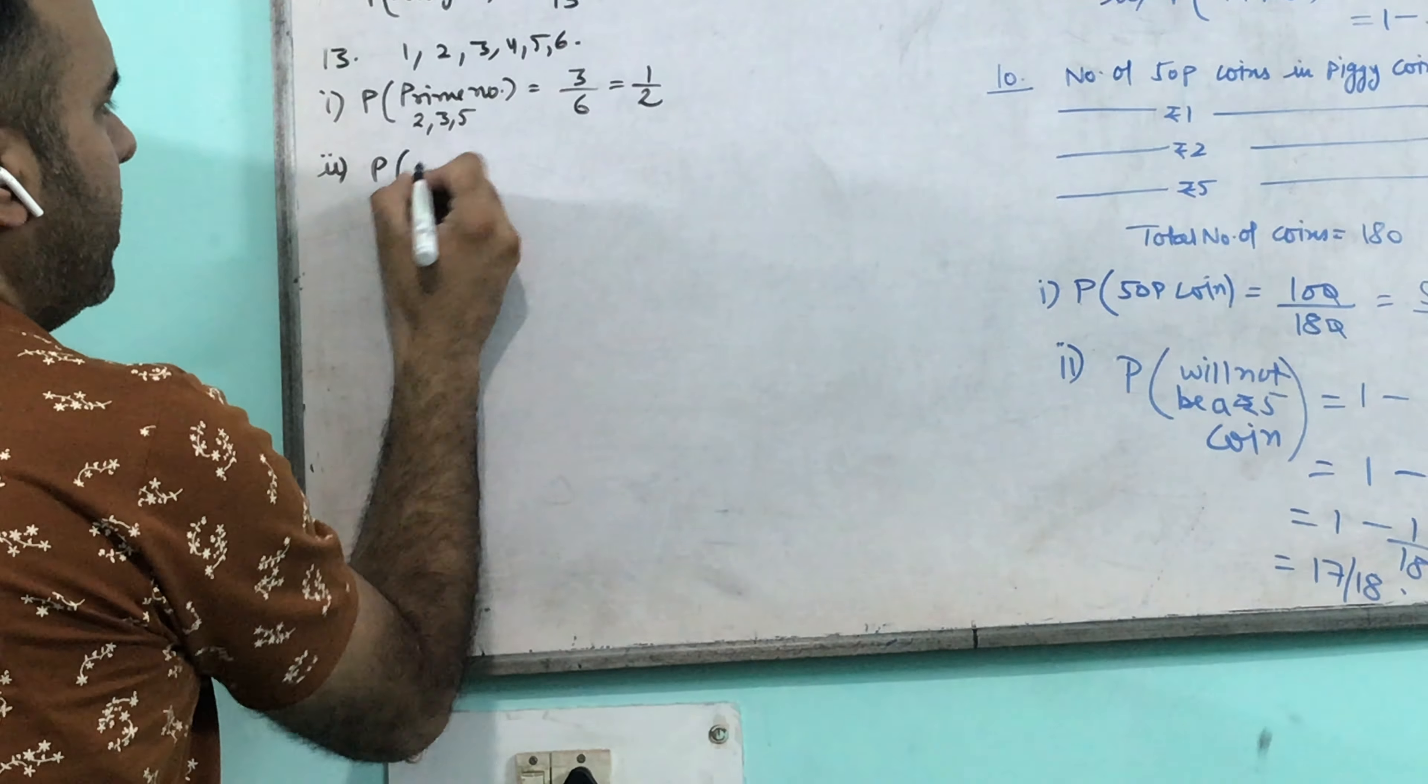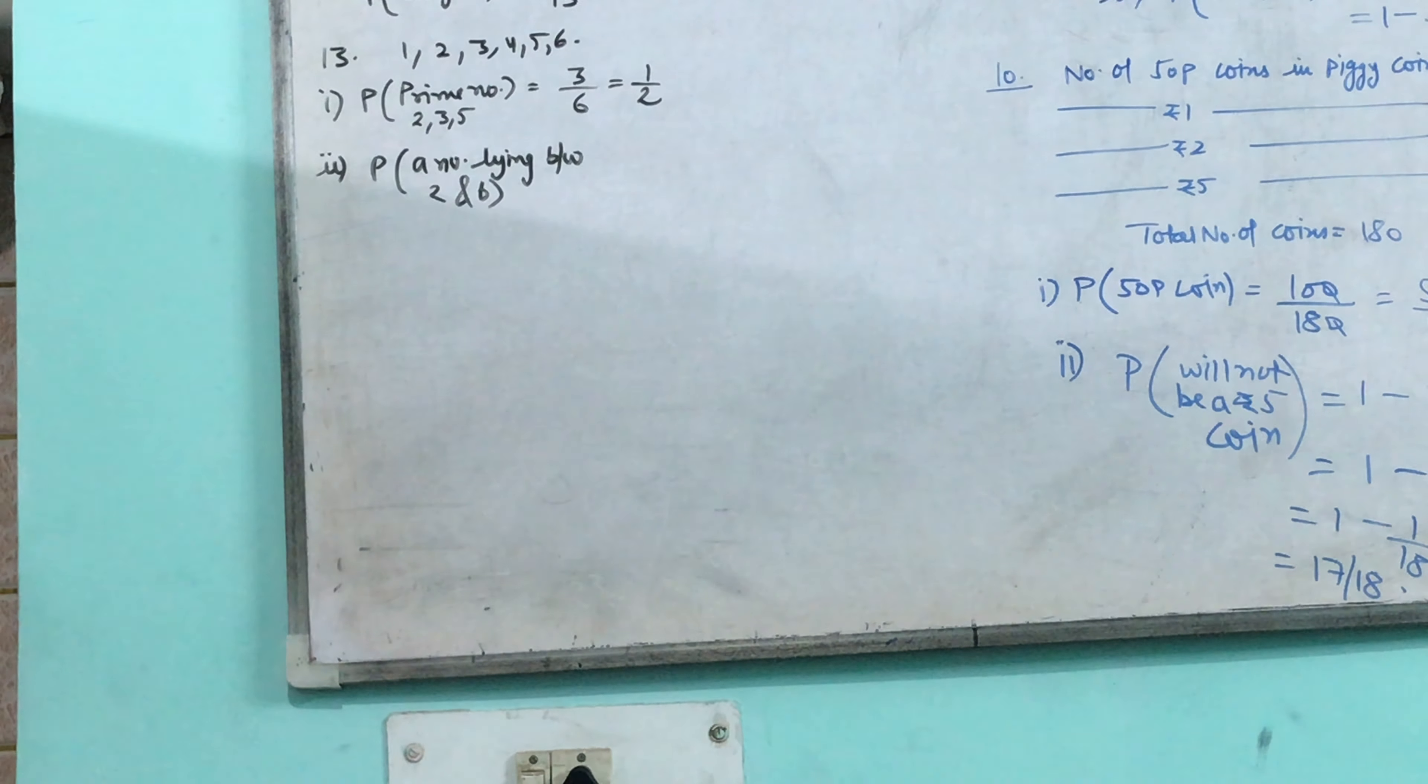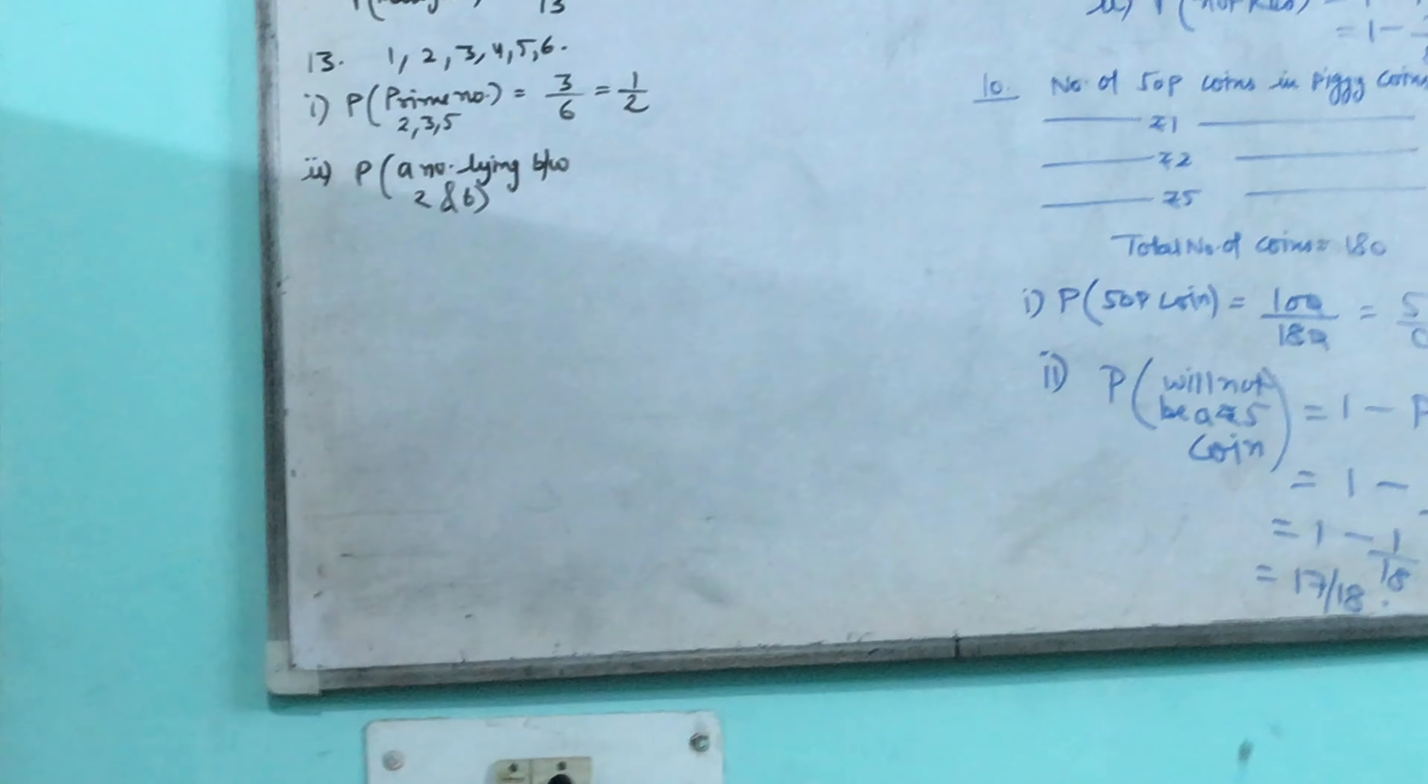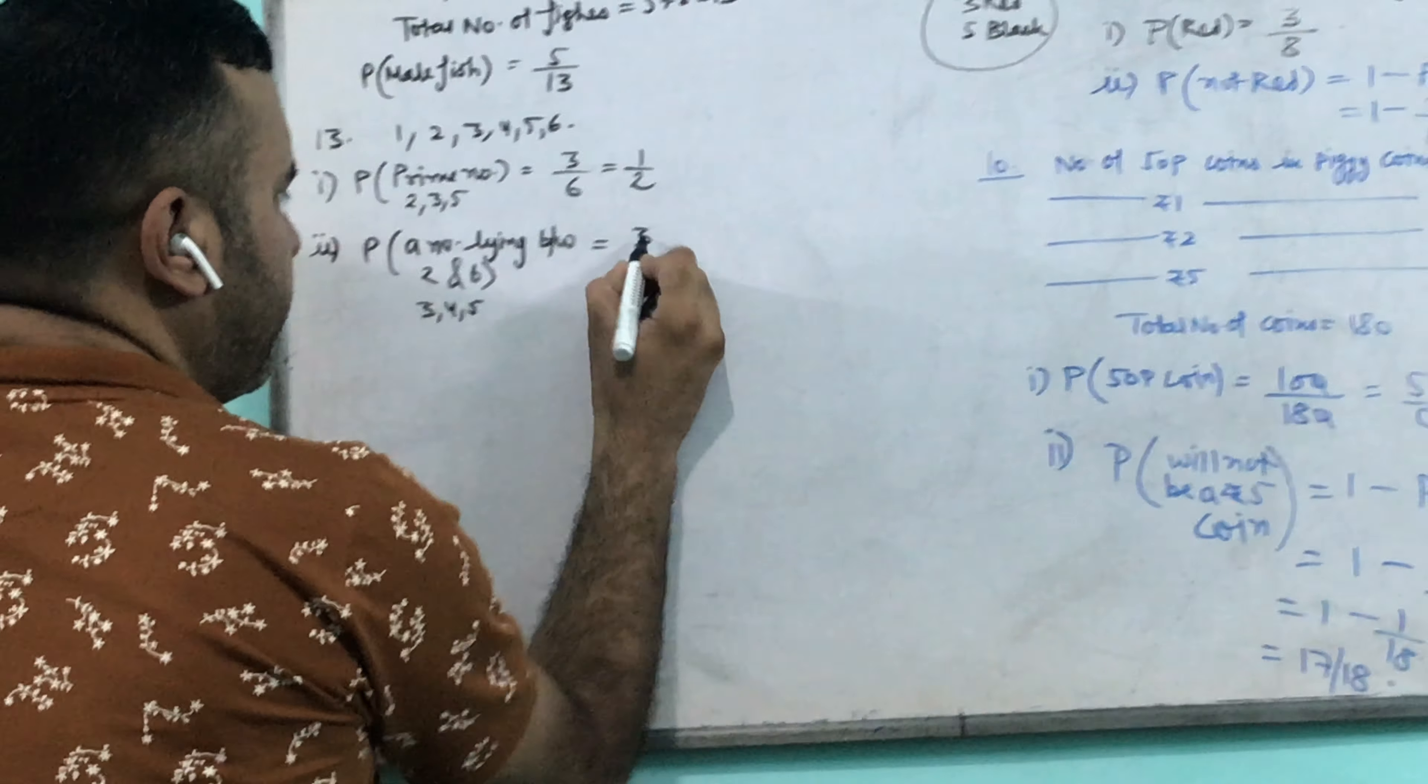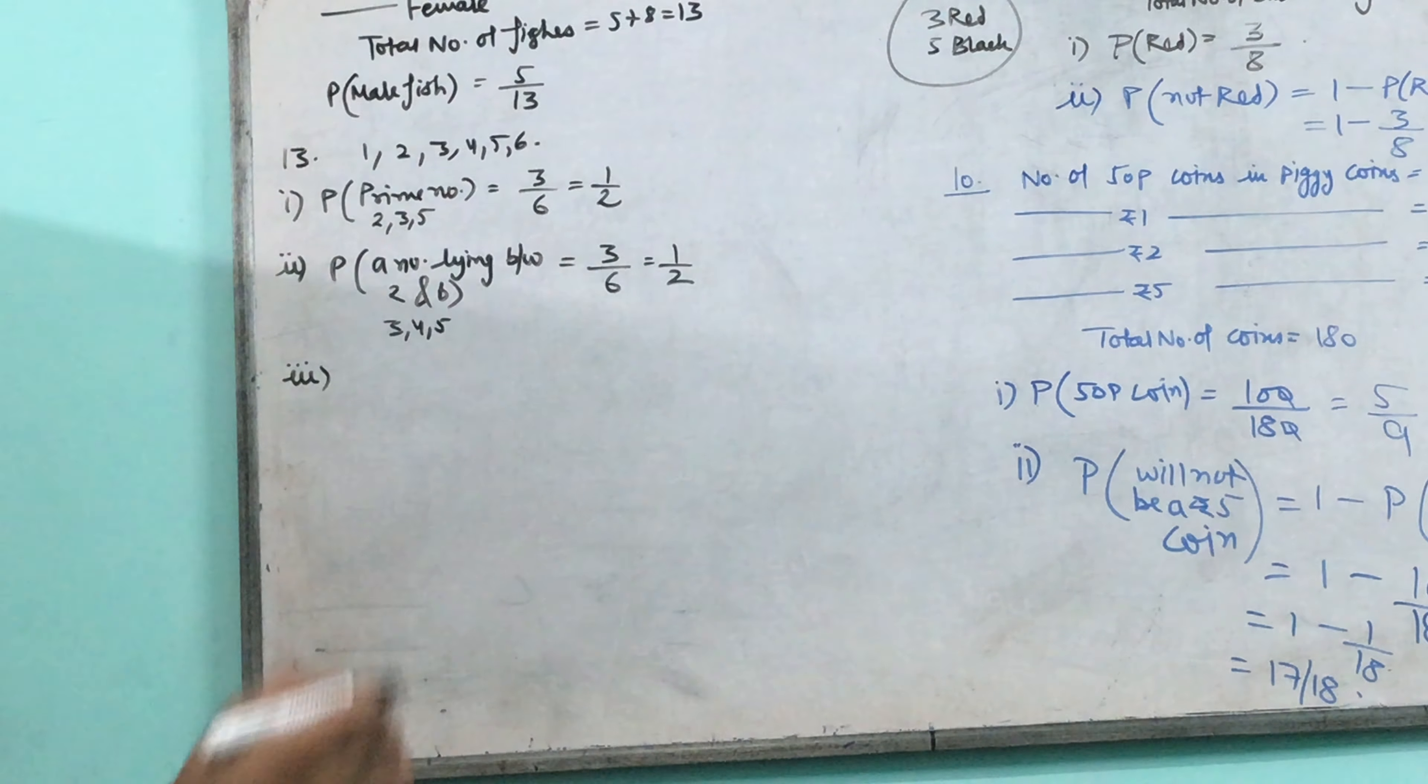The second part is probability of a number lying between 2 and 6. Now see if you have a question like this, lying between 2 and 6, do not count 2 or 6. Between means you count 3, 4 and 5. So 3 by 6, which is 1 by 2. If the question says between 2 and 6, do not count 2 or 6, okay?